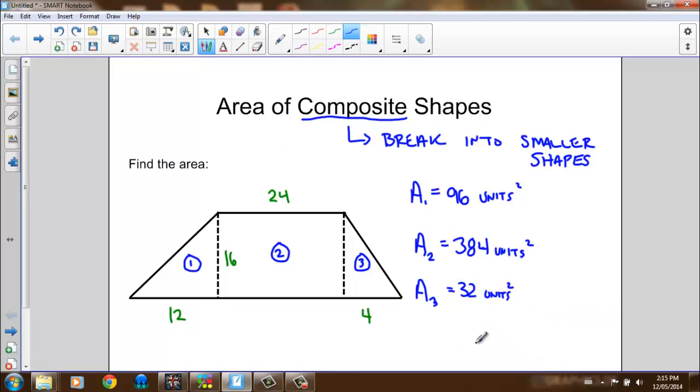So I found the three areas individually. To find the total area, which I'll call A_T, I need to take area 1, add it to area 2, and add it to area 3. Adding these three areas together, 96 plus 384 plus 32, I get 512 units squared.